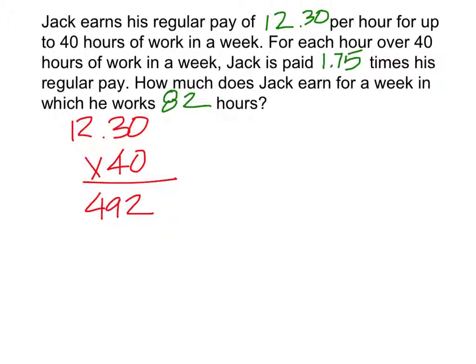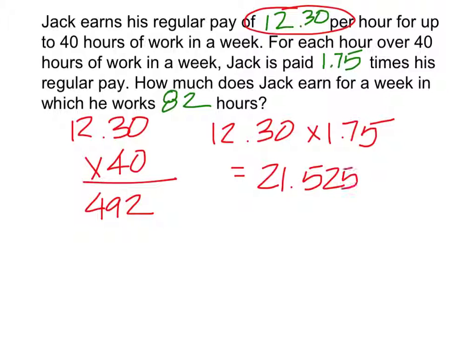Now, we're going to have to multiply his hourly rate, 12.30, by 1.75. 12.30 times 1.75 is 21.525. Alright. That's what he's going to make an hour for his overtime hours. So, you're going to have to multiply that by the amount of hours he spent past 40. So, he's worked 82 hours, so he's going to work 42 hours overtime.